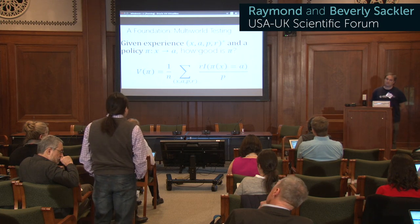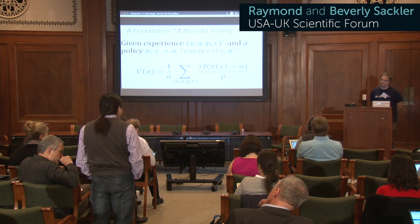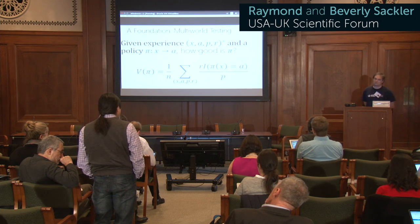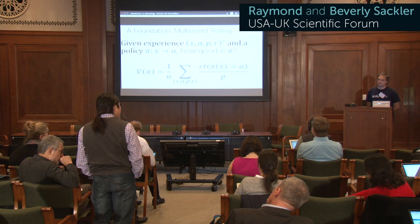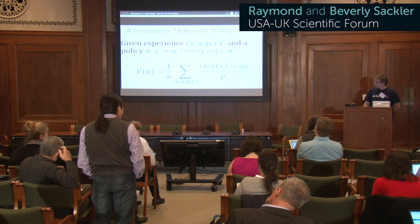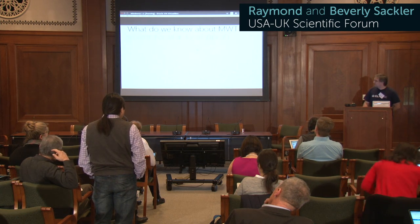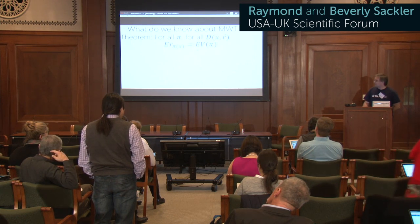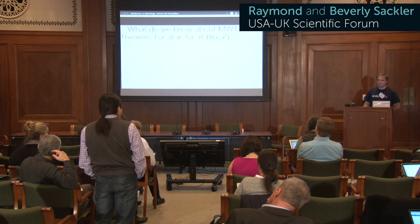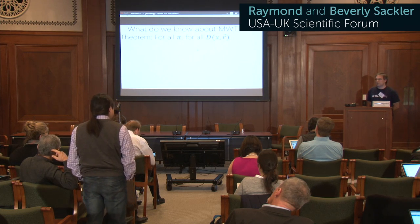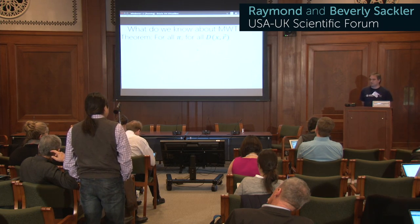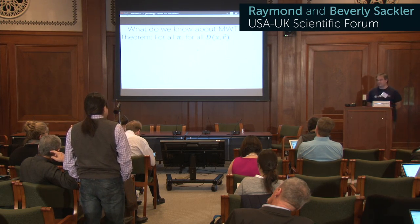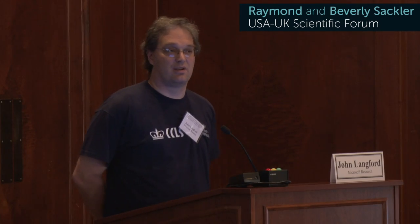Another question is about this underlying distribution D over individuals and reward. Do you assume that to be stationary? The proof, if you look at it closely, holds point-wise. So it's not necessarily that D is stationary.